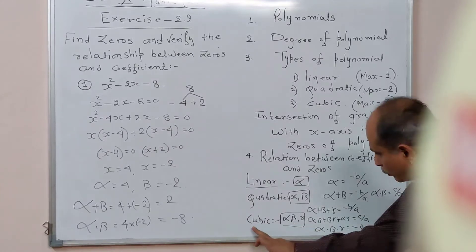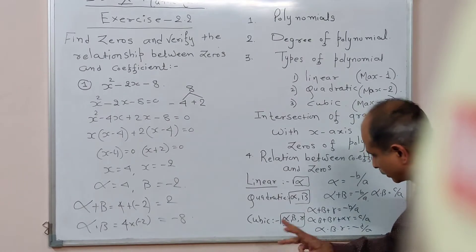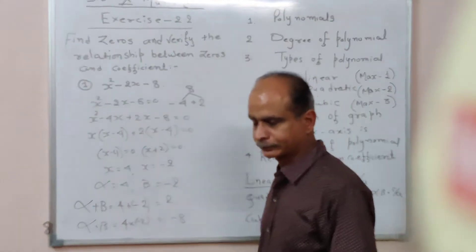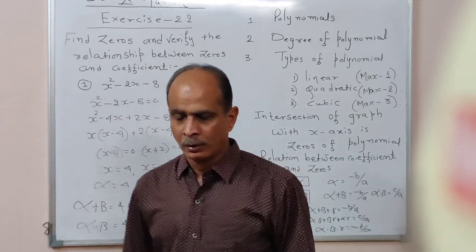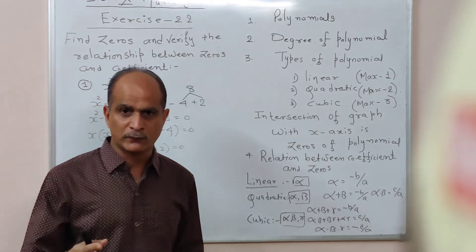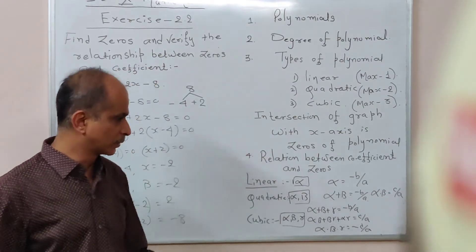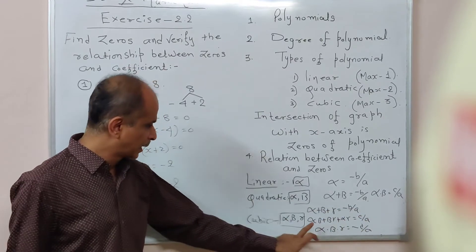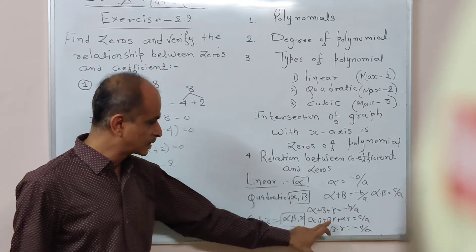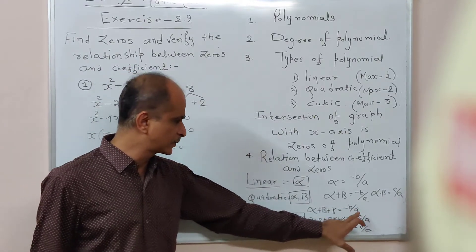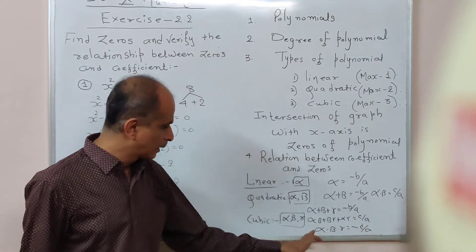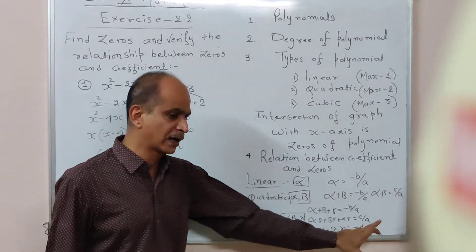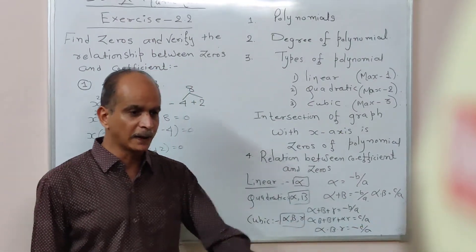Similarly, for a cubic polynomial, there are three zeros: alpha, beta, and gamma. Alpha plus beta plus gamma is equal to minus b by a. Alpha beta plus beta gamma plus alpha gamma is equal to c by a. And alpha into beta into gamma, meaning the product of the zeros, is equal to minus d by a.